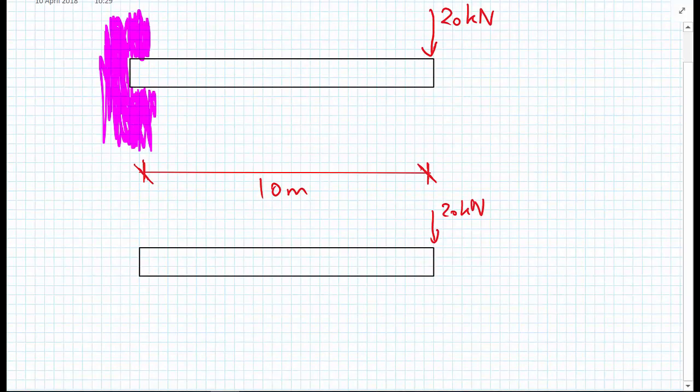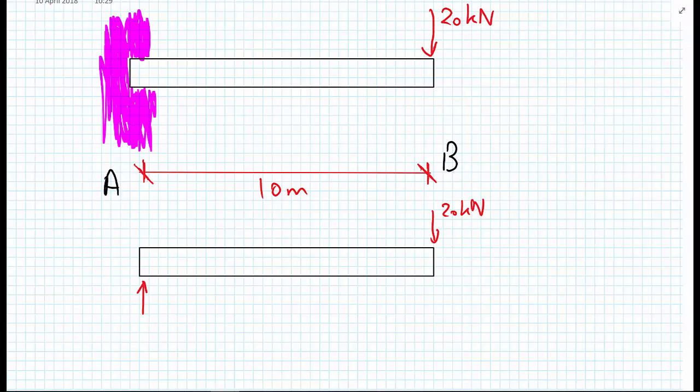We'd also expect from this brick wall that there would be some support in the Y direction. So if I call this end A and this end B, then this support condition would be giving us a reaction force of R_AY for the Y direction.